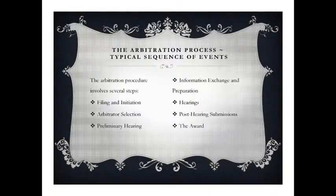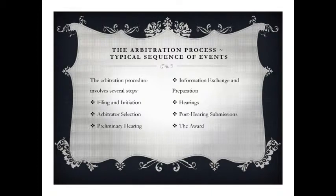Once it gets to the arbitration stage, it also follows a series of steps. The first step is filing and initiation — the arbitration case begins when one party submits a demand for arbitration. The other party, the respondent, is notified by the arbitral tribunal and a deadline is set for a response. Second, the arbitrator is selected — the arbitral tribunal works with the parties to identify and select an arbitrator based on criteria determined by the parties. Then there is a preliminary hearing where the arbitrator meets with both parties to discuss the issues in the case and procedural matters such as witnesses, depositions, and sharing of information.